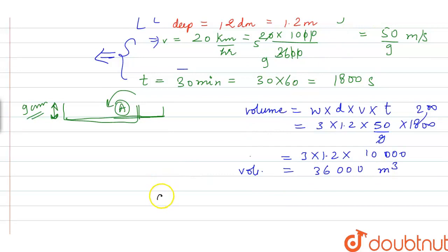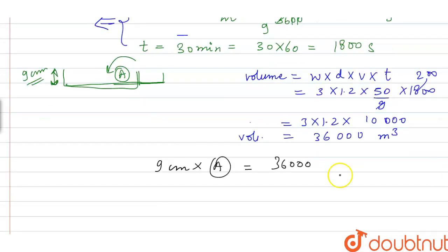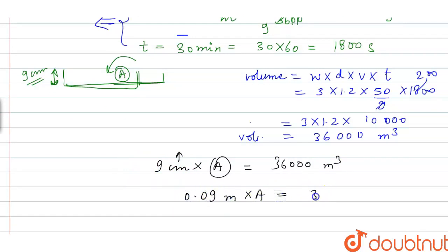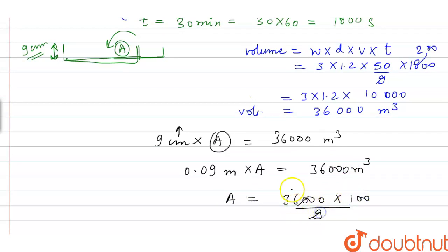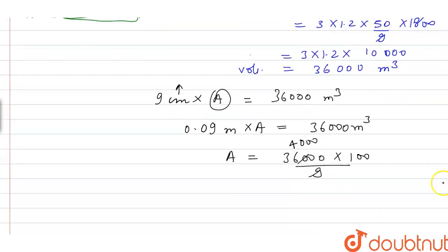This volume equals 9 centimeters of standing water height multiplied by the area under irrigation. Converting 9 centimeters to meters gives 0.09 meters. So: 0.09 × A = 36,000. Therefore A = 36,000 × 100 / 9 = 4,00,000 m².